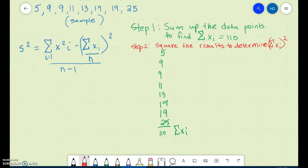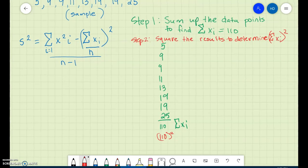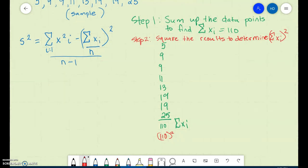So when we calculate 110 squared, we're going to get 12,100, and that represents the sum of Xi squared.